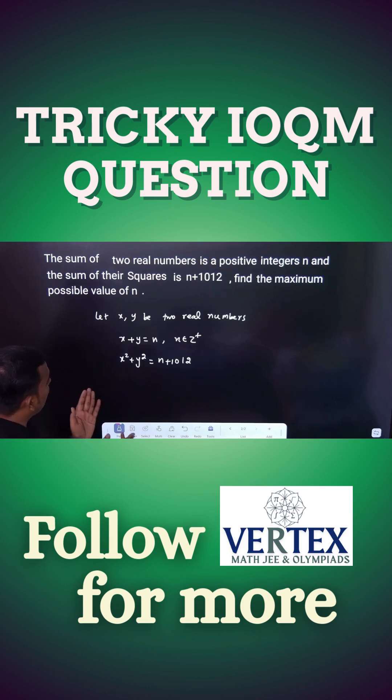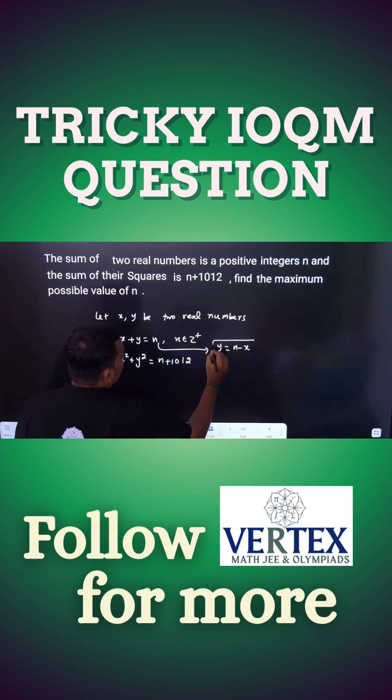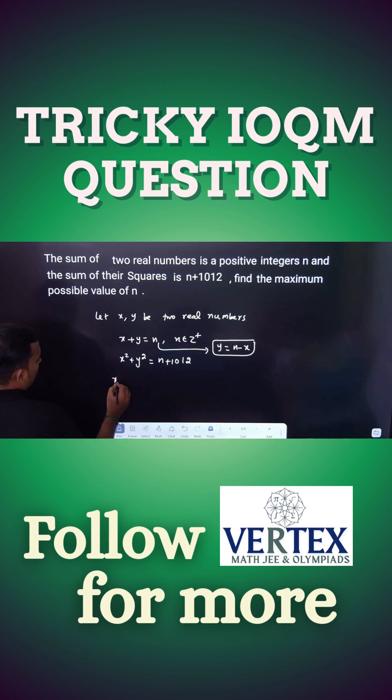Let us take, first you have to write in a single variable. You have to see here, how to write y is equal to n minus x. You can write now, just replace here, x square plus n minus x whole square is equal to n plus 1012.